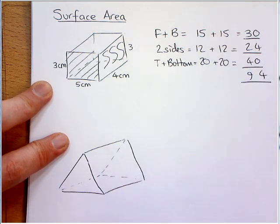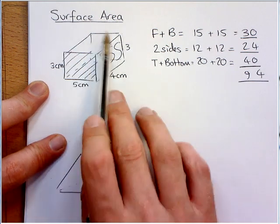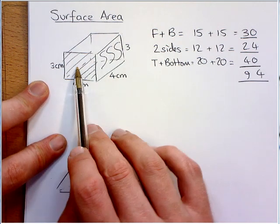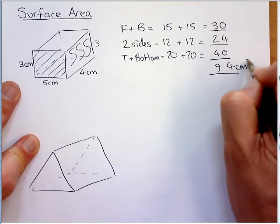Now, yes, this is a three-dimensional shape, but we're only looking at the surfaces. So, that's still the area of those. And it does say area there. And it will do in the question. So, area is always two-dimensional.